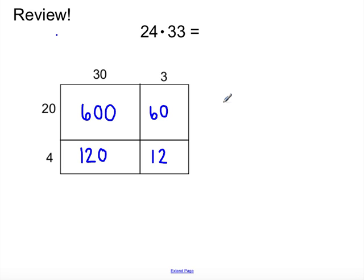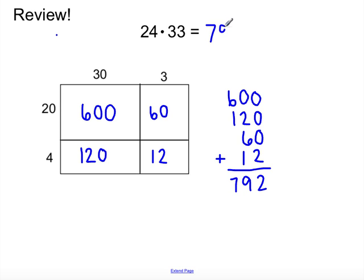So, then in order to find the total answer, I need to add up all the areas. So, I need to do 600, and I have to be very careful when I line them up, plus 120 to make sure I'm lining up place values correctly, 60, and 12. So, I'm adding. 0 plus 2 would be 2. 0 plus 2 is 2, plus 6 is 8, plus 1 is 9. And then, 6 and 1 is 7. So, my final answer is 792.